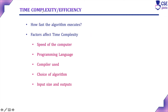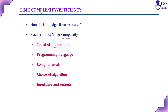The time complexity of an algorithm is how fast the algorithm executes — that is, the total execution time of the algorithm. This time complexity is closely associated with the algorithm. There are different factors that affect time complexity: the speed of the computer, the choice of programming language, what type of compiler is used, and the choice of the algorithm.